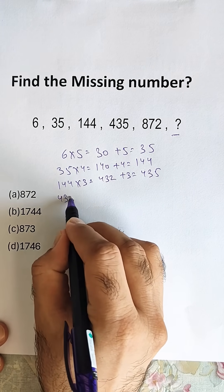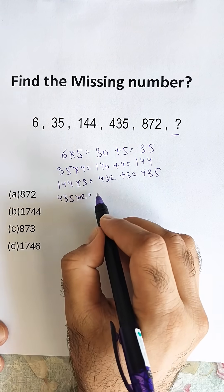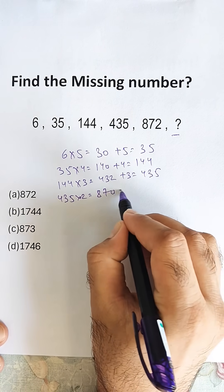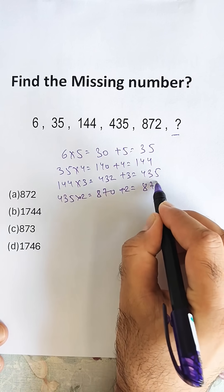Next will be 435 into 2, that is 870, and adding 2 is 872.